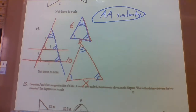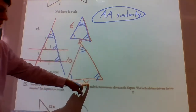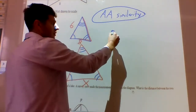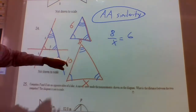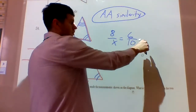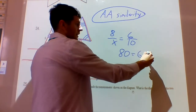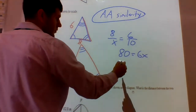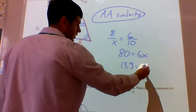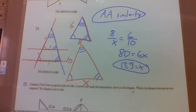Since they're similar by angle-angle, the sides are proportional. Setting up the proportion: 8 over X equals 6 over 10. Cross multiplying: 80 equals 6X. Dividing both sides by 6: X equals 80/6, which is 13.3 repeating.